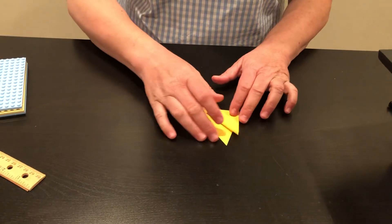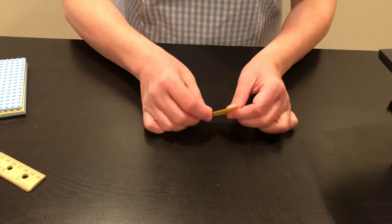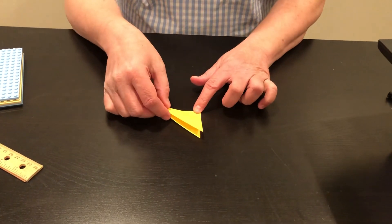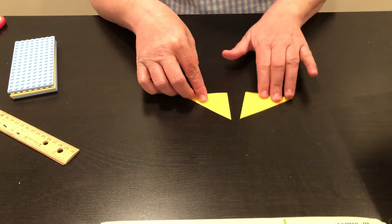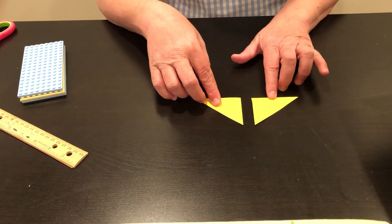Another thing that we can do to move congruent shapes is called a flip or a reflection, just like looking in the mirror. So if I had these two shapes and I flipped one over, that would be a flip or a reflection.